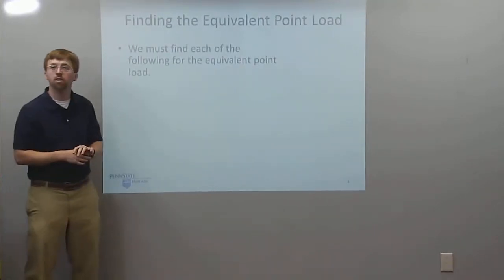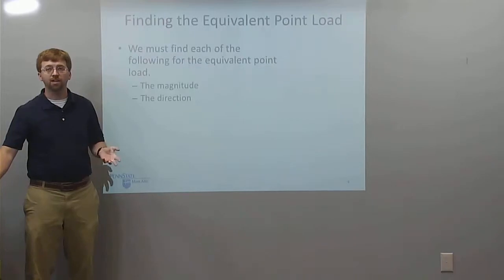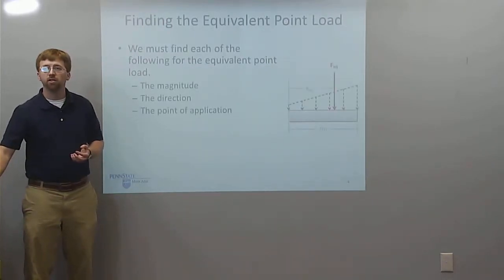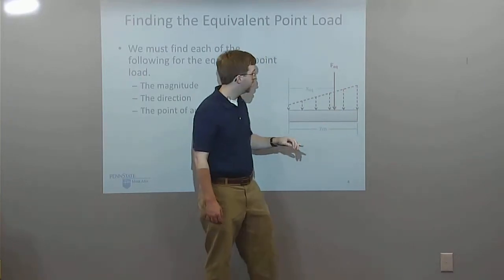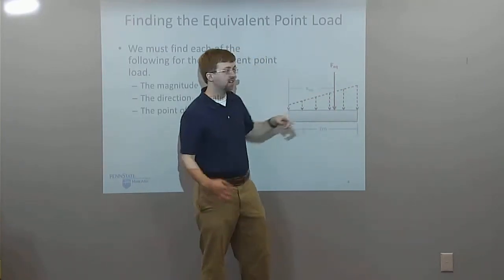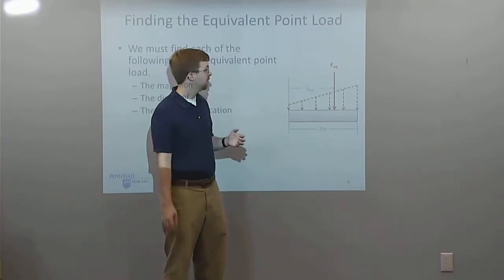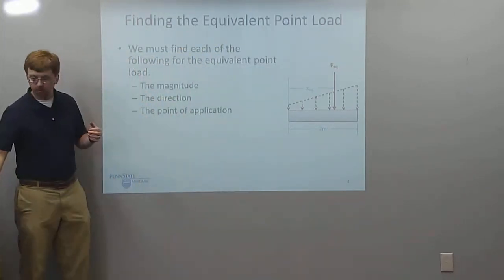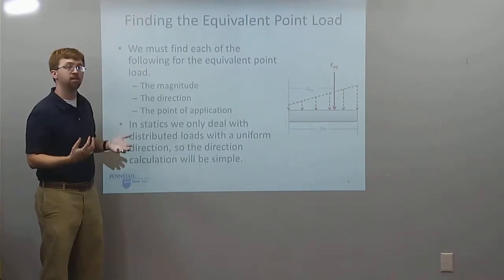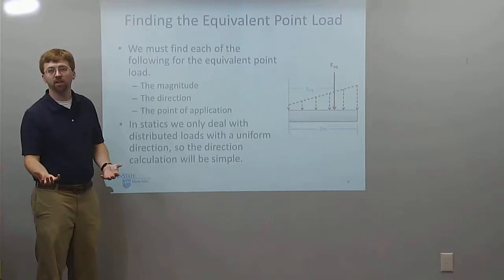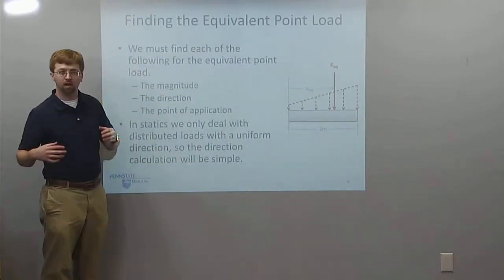To find the equivalent point load, we need to find a magnitude, a direction, and a point of application. In our diagram, I've got some distributed force that gets stronger on one side, as shown by the dotted lines. The single arrow represents my equivalent point load. In statics, we really only deal with distributed forces that have a uniform direction, so the direction of the equivalent point load matches the direction of the distributed force.